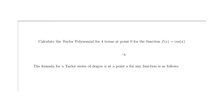Today we're going to calculate the Taylor polynomial for four terms at the point zero for the function cosine of x. When calculating the Taylor polynomial, you want to know the degree — in our case four terms, so degree four — the point a, which is zero, and the function, which is cosine.